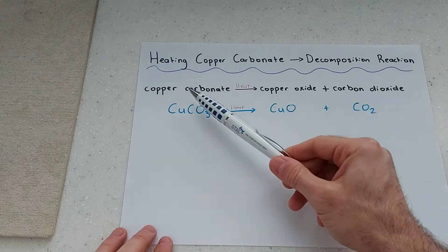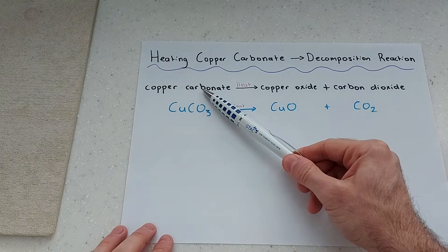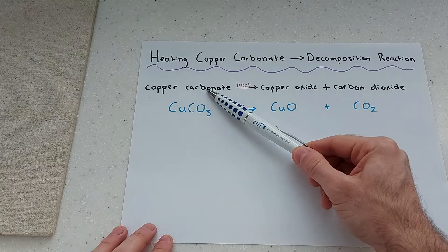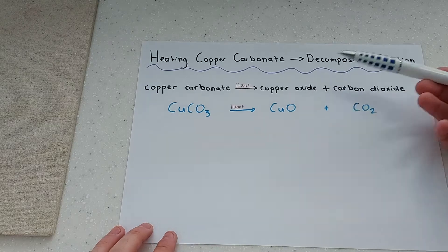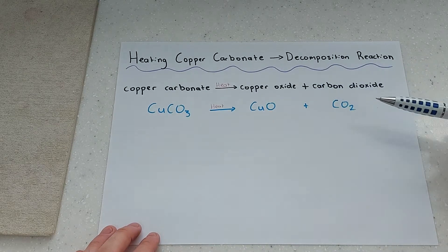My word equation and reactants are copper carbonate. Now with the introduction of heat that is going to break apart the copper carbonate, it's going to decompose it in order for me to produce copper oxide and carbon dioxide. These are my two products.